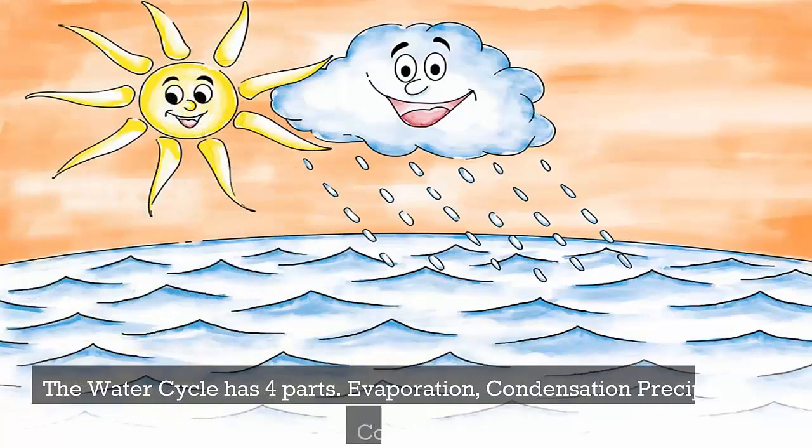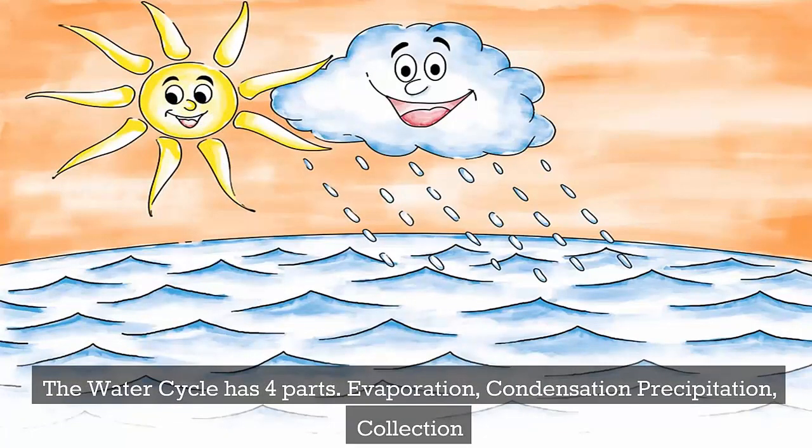The water cycle has four parts: evaporation, condensation, precipitation, and collection.